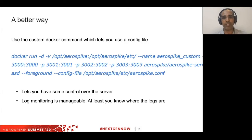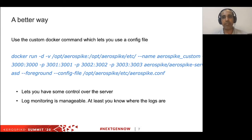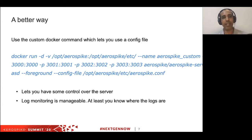The name option is optional — you can specify any name; I've given 'aerospike-custom.' We are also using the minus P option to map the ports on which Aerospike runs. If you are new to Aerospike: port 3000 is used for all client communications, and so does XDR communication. Port 3001 is used by fabric, which is a protocol for intra-cluster communication. Port 3002 is used by heartbeat in the mesh configuration.